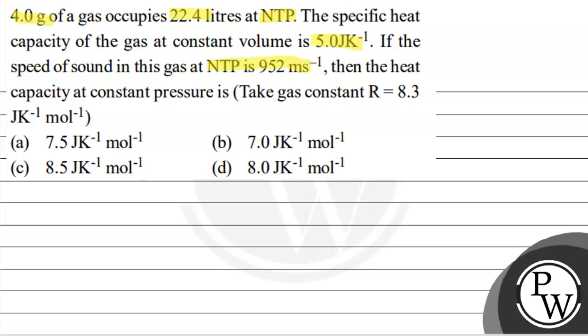The gas constant value in this question is given. 4 grams of gas occupies 22.4 liters at NTP.